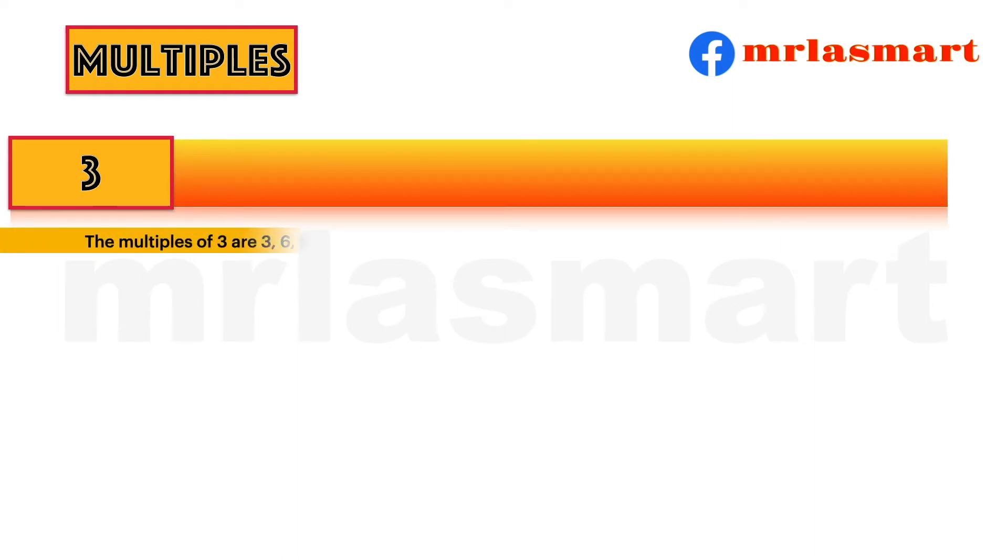The multiples of 3 are 3, 6, 9, 12, 15, 18, 21, 24, 27, 30 and so on.